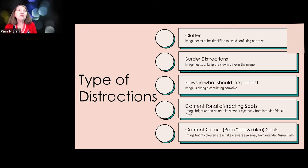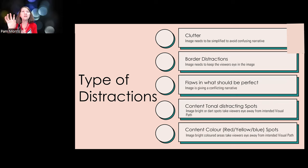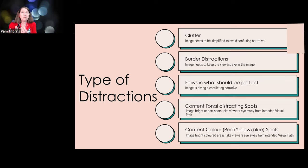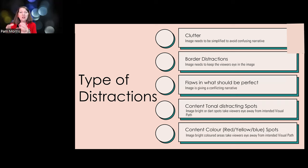The other thing is tonal distractions. In the big white magnolia flower, you could see tonal distractions in the background - those bright highlights on the leaves. Instead of drawing the viewer's eye to the center of the magnolia where you wanted them to look, their eye would jump off to those bright lights on the leaves. So that's another reason to get rid of them - to keep the viewer focused on what you want them to look at.